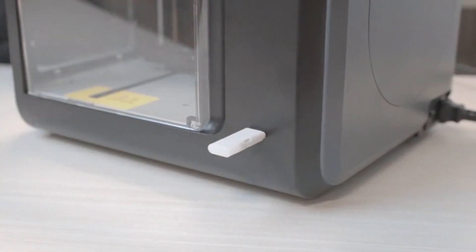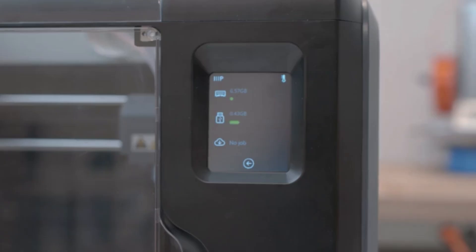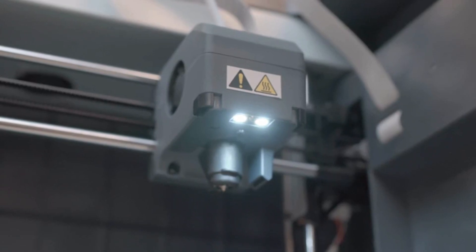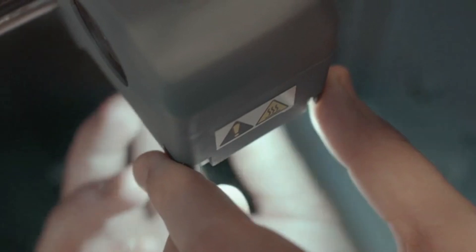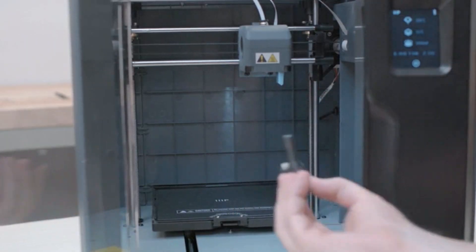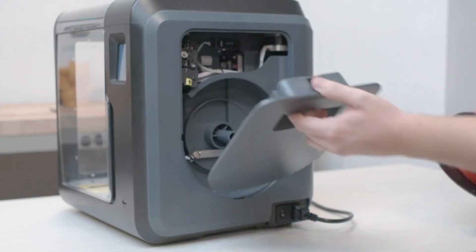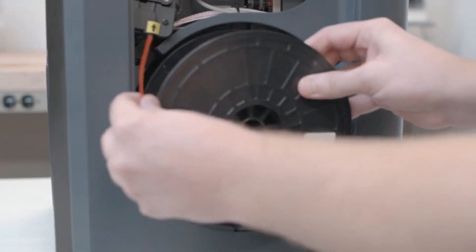Novices will particularly appreciate the heated print base on the Voxel, which means more reliable prints when you use materials like ABS. The top of the print bed slides out too, and it's bendable, so removing prints is a snap. We also like the fact that the Voxel is enclosed, an important consideration if you're planning on using a 3D printer in a home or classroom.